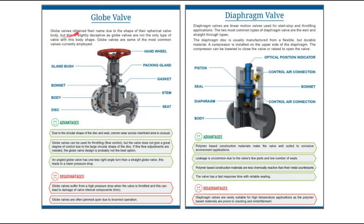The next valve types are globe valve and diaphragm valve. Globe valves obtain their name due to the shape of the spherical valve body, though globe valves are not the only type of valve with this body shape. Globe valves are some of the most common valves currently employed. Due to the circular shape of the disc and seat, uneven wear across the machined area is unusual.